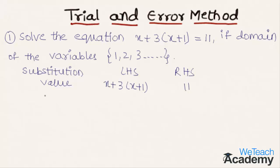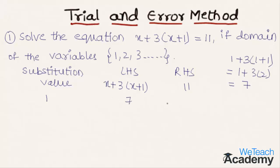By substituting x equal to 1 on the left hand side we get 1 plus 3 into 1 plus 1, which is 1 plus 3 into 2, and we get the LHS value as 7. On the right hand side we have the constant term 11.